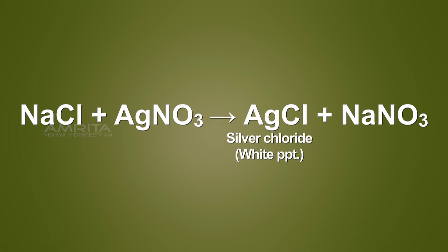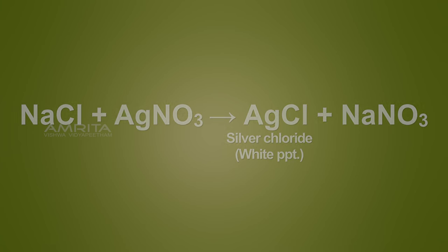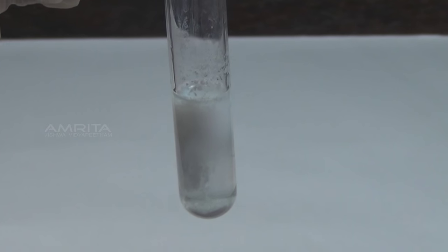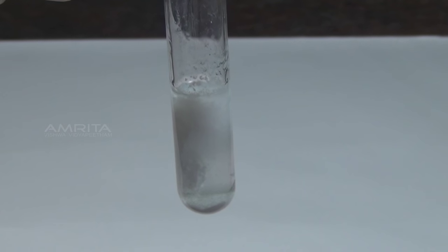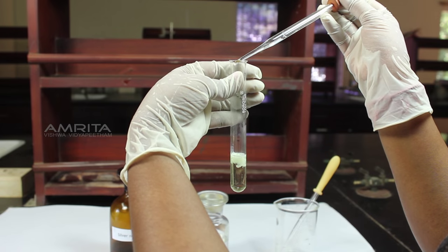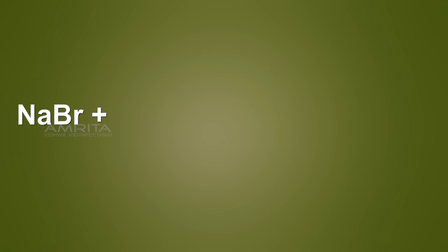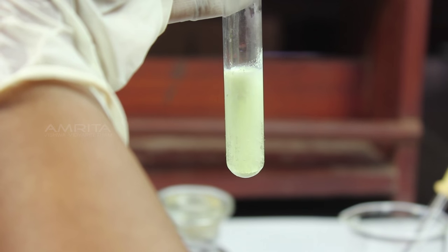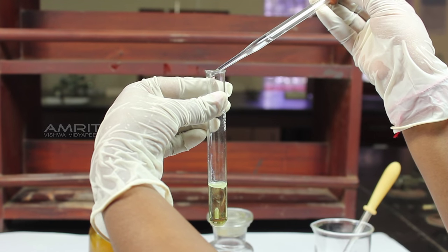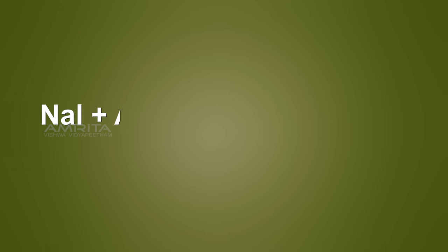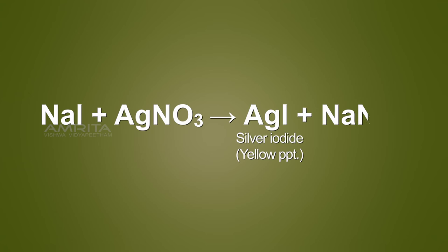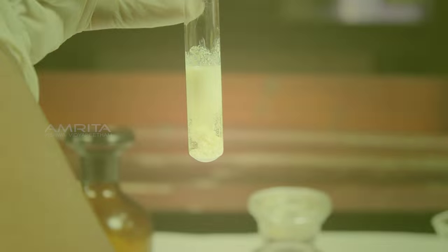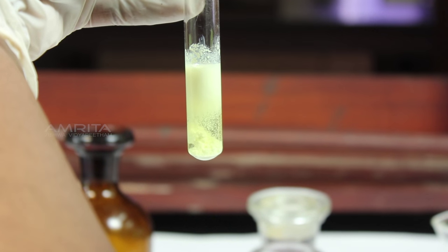If the organic compound contains chlorine, the sodium chloride formed during fusion reacts with silver nitrate to form a white precipitate of silver chloride. If the organic compound contains bromine, the sodium bromide formed during fusion reacts with silver nitrate to form a pale yellow precipitate of silver bromide. If the organic compound contains iodine, the sodium iodide formed during fusion reacts with silver nitrate to form a yellow precipitate of silver iodide.